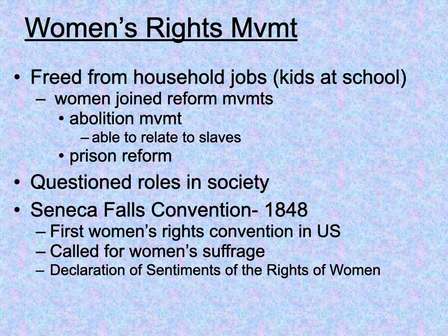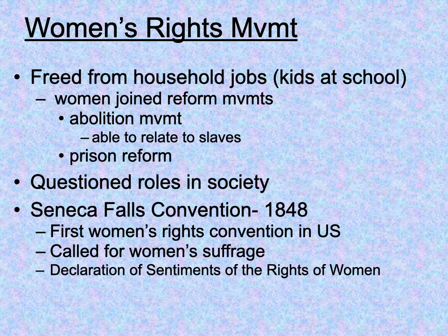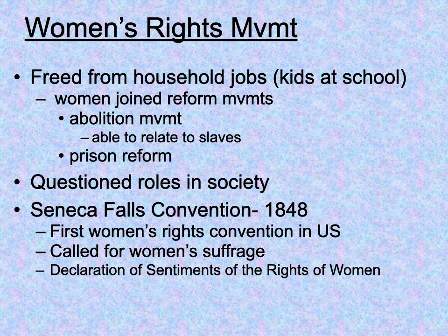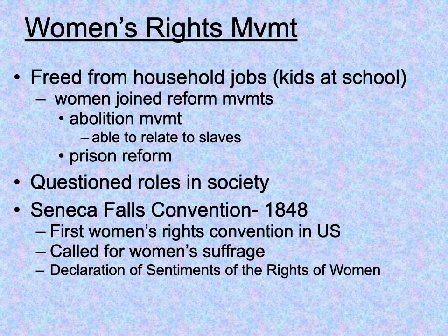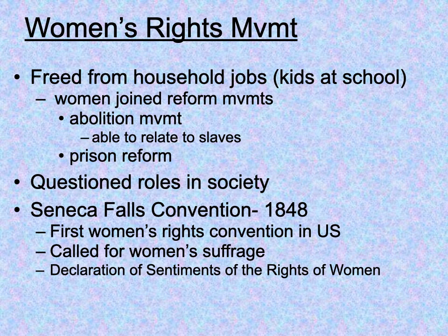Many women started to question their roles in society. We have the Seneca Falls Convention, one of the most monumental women's rights events, which took place in 1848 — the first women's rights convention in the United States. They were advocating for women's suffrage, the right for women to vote. Unfortunately they were not successful in this movement until much later — in 1920 with the passage of the 19th Amendment, which gives women the right to vote. They also issued the Declaration of Sentiments to Congress to advocate for more rights for women in politics and society.